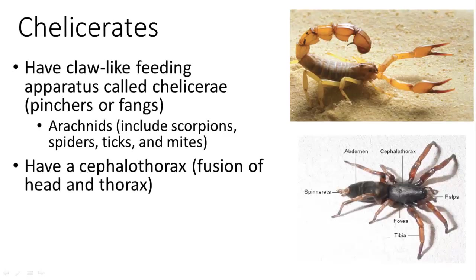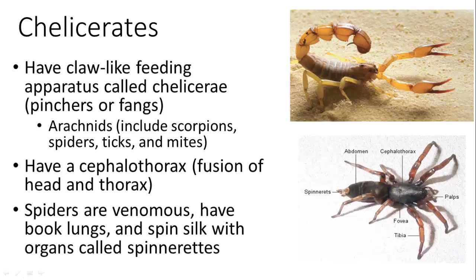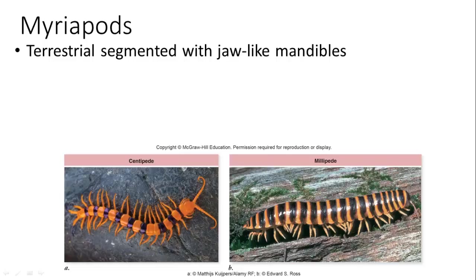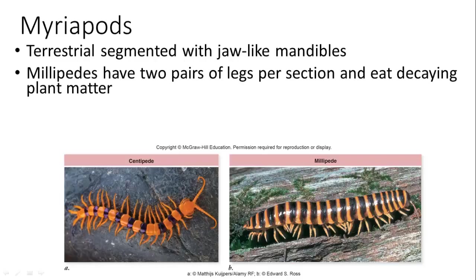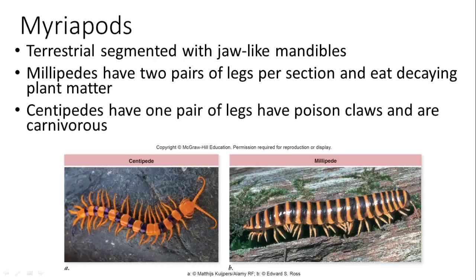Chelicerates are spiders and arachnids; they have a cephalothorax (fused head and thorax) and an abdomen. Spiders are venomous, have book lungs, and spin silk with spinnerets. Myriapods are terrestrial segmented arthropods with jaw-like mandibles. Millipedes have two pairs of legs per segment and eat decaying matter. Centipedes are venomous and carnivorous.